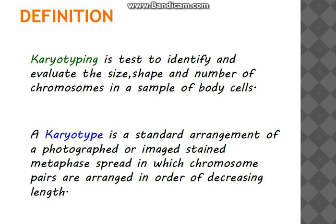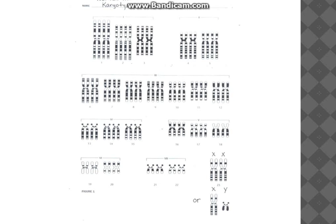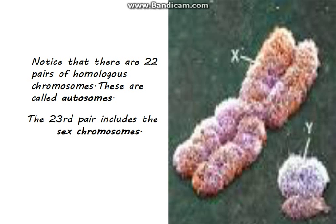What is a karyotype? It is a standard arrangement or photograph or image of stained metaphase spread in which chromosome pairs are arranged in order of their decreasing length. This is an example of a normal human karyotype. The chromosomes are arranged in order of decreasing length. There are 22 pairs of autosomes, whereas the 23rd pair is the sex chromosome.